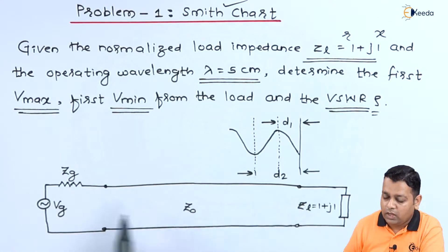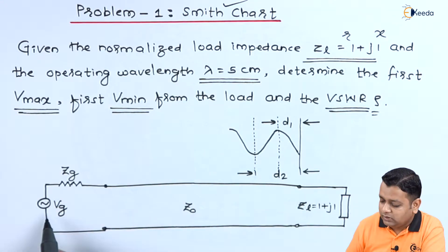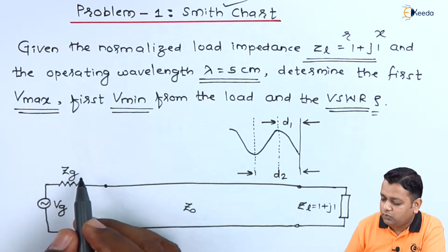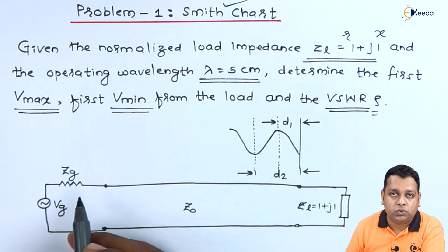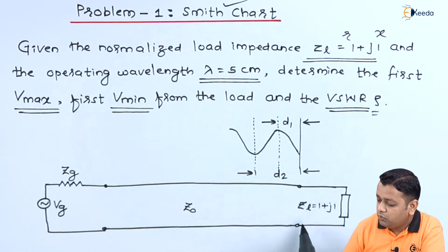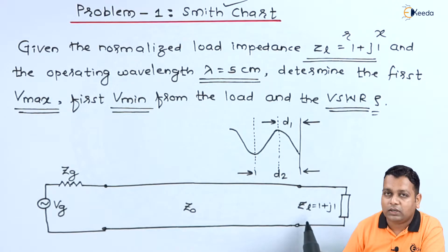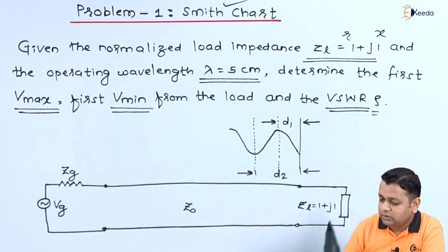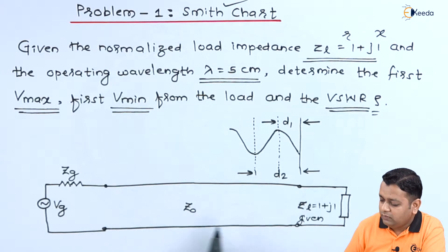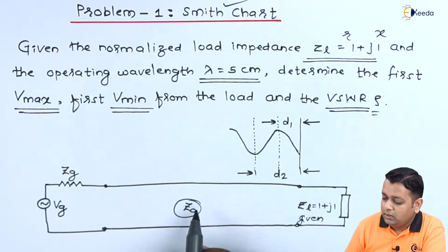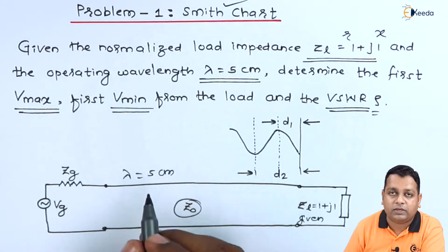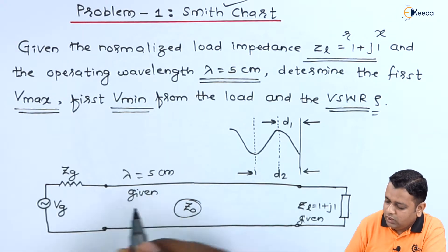On the associated diagram, we find the generator side with supply voltage V_G for generator and associated input impedance Z_G. From these two points, the microwave transmission line runs up to the load connected with value Z_L equals 1 plus J1. For the microwave transmission line, we have the characteristic impedance Z_0, and we can mark lambda equals 5 cm — another given value from the problem statement.